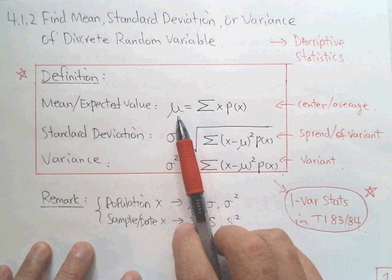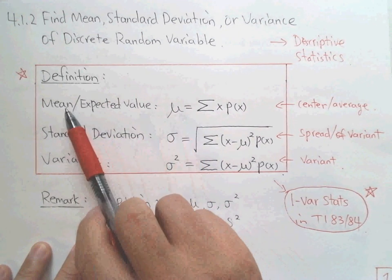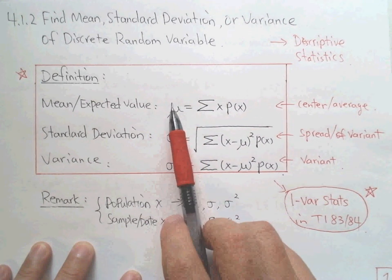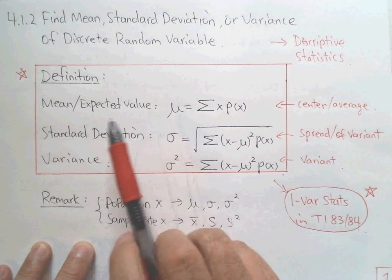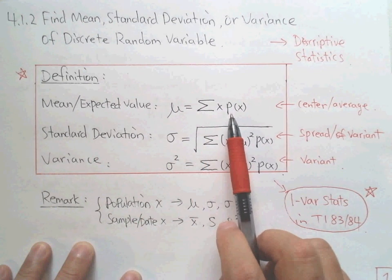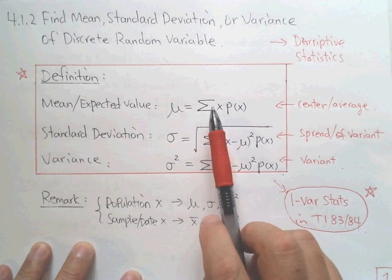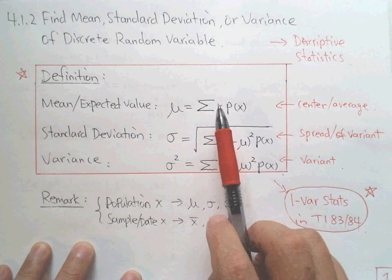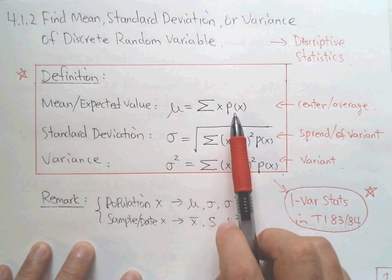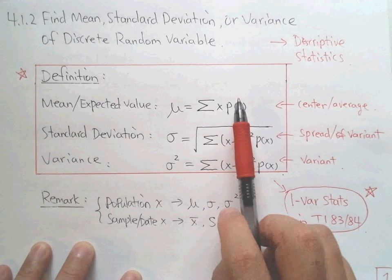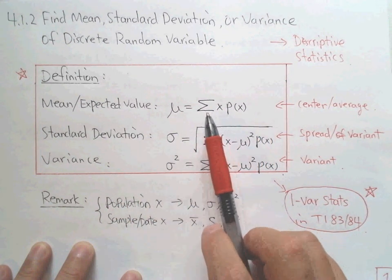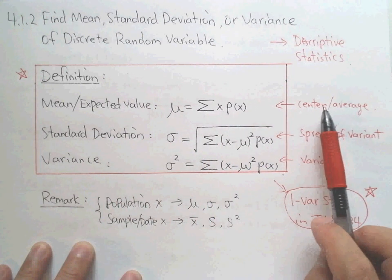The notation for the mean this time is not x-bar. We use mu to describe the mean of a random variable. The sigma here represents summation — you add them together. If we have a probability distribution table, you find each value times its corresponding probability, then add all of them together. We simply say the sum of all the products, and this tells you the center or the average.